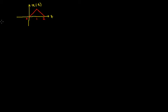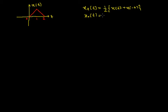For such a signal we need to find its even and odd part. The even part can be represented as Xe(t) = (1/2)[X(t) + X(-t)], and the odd part Xo(t) = (1/2)[X(t) - X(-t)]. We already know that X(-t) is the mirror image of the signal X(t).